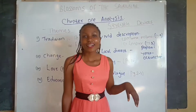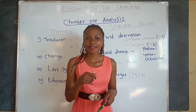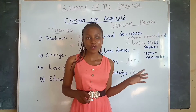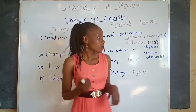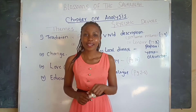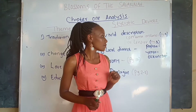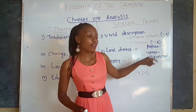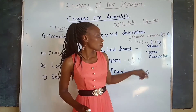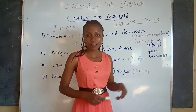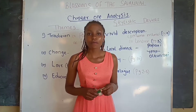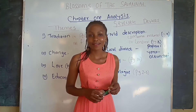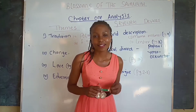The second stylistic device is local dialect. Many words from the Maasai culture or Maasai language are used in the book. The first is Papai, which means father. We also have Yeyo, which means mother. We have Olkunchai, which means cattle trader. We also have Intoiye Nemengalana, which means uncircumcised girls.